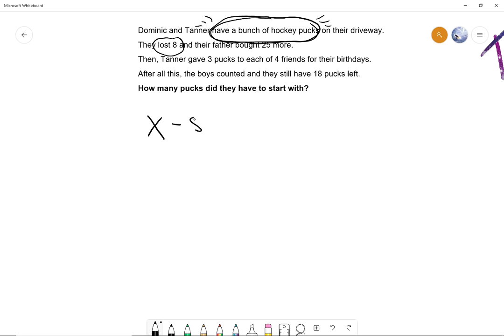Tanner lost 8 and your father gave you 25 more. So X minus 8 because you lost 8, and then you got 25 extra, which gives you that, right? And then you gave 3 pucks to 4 friends, so you are subtracting 3 pucks 4 times, so that's 3 times 4. And after all that you got 18 pucks left. Okay, so let me show you that everything in the sentence here matches something in the equation. The bunch is here, we lost 8 so that's here, the 25 gives me this piece of information, and giving 3 pucks to 4 friends give me this, and 18 gives me that.